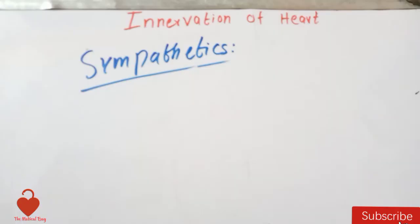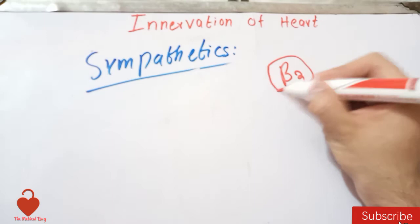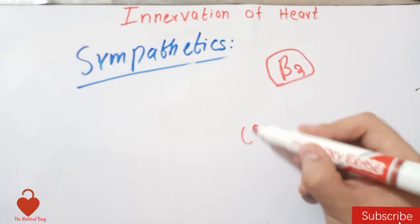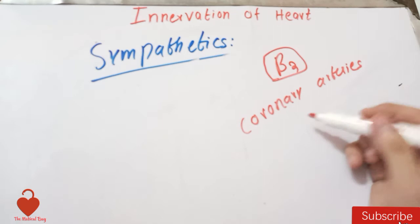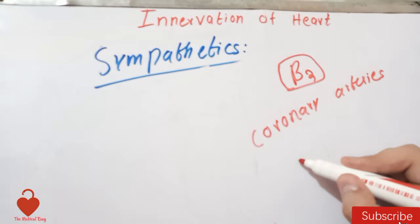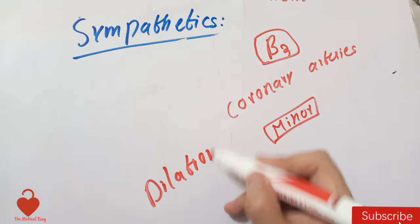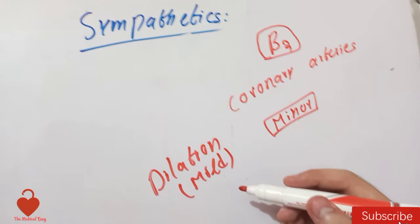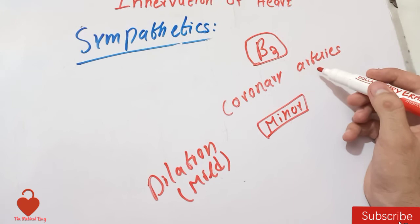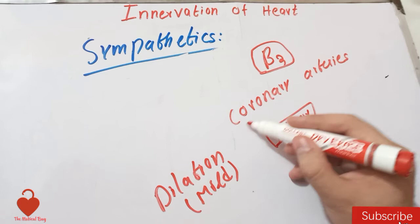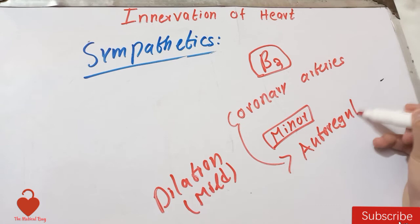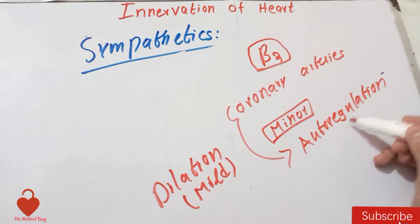Beta-2 receptors are present only on the coronary arteries, which supply arterial blood to the heart musculature. This beta-2 representation on the coronary arteries is only a minor one, but it causes mild dilation of the coronary arteries so that more blood is supplied to the heart during sympathetic stimulation. Most of the time, however, the coronary arteries are regulated by an autoregulatory mechanism — just like the cerebral arteries — and we will discuss that in another video.